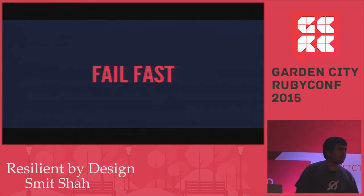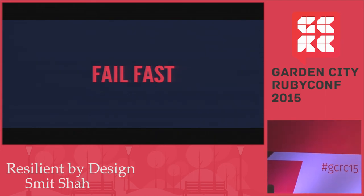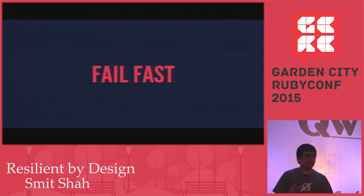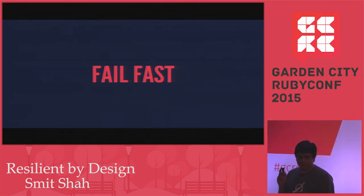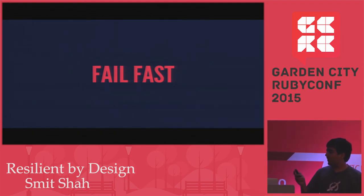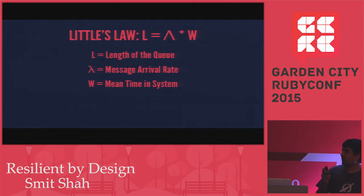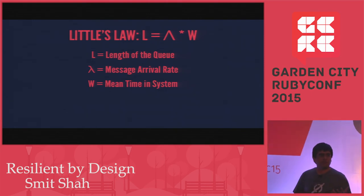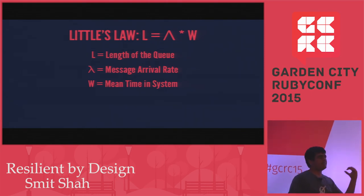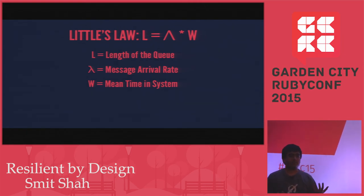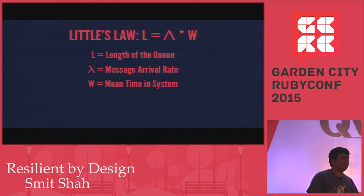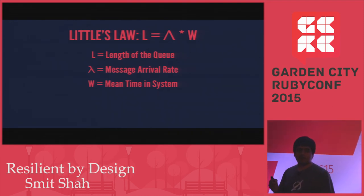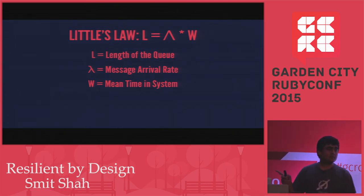Fail fast. In both the previous points I've been mentioning that you should be failing fast — that failing fast is much better than taking time. Why is that? I'm going to need some math for this. This is Little's Law, which comes under queuing theory. Your length of a queue depends on how many messages are arriving and how much time your system is taking to process them. Now think about it: if you're not failing fast and there's something wrong with your server or the service you're talking to, your mean time in the system is going to shoot up — it's going to be very high — which means your queue length is going to increase over time.